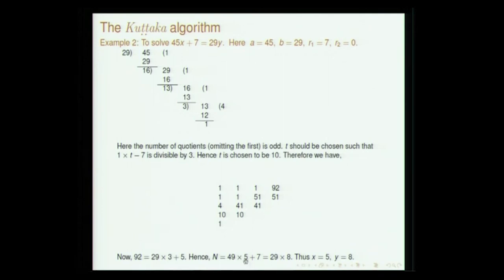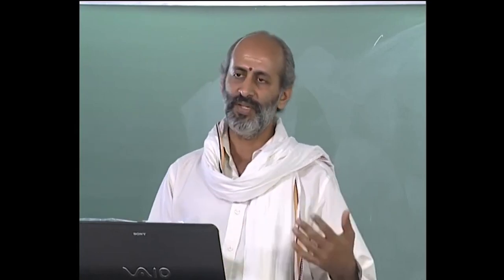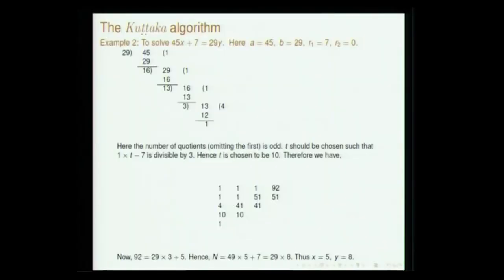This is all the Kuttaka algorithm is about. Now I leave the Kuttaka algorithm and move on. Aryabhata is the first to discuss this Kuttaka algorithm. Later, Brahmagrupta has also discussed this, as have Bhaskara and Mahavira. All later astronomers provided certain modified versions of this Kuttaka algorithm, and those will be covered when we discuss those texts.